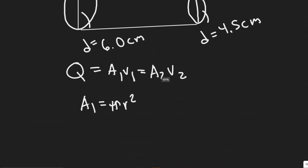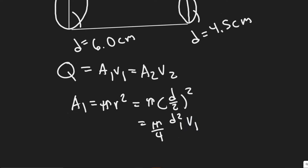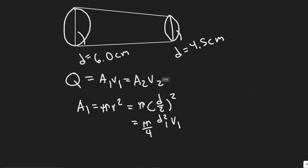Keep in mind we're using diameter here, so the radius is the diameter divided by 2. Substituting that in, the area becomes pi over 4 times d squared. We can choose it at the first point: pi over 4 times d1 squared multiplied by V1. We know the diameter but not the velocity, so that's what we need to solve for.